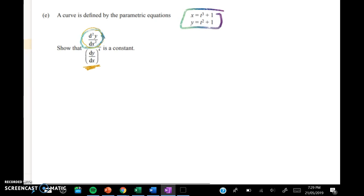We have to show that the second derivative divided by the first derivative to the power of 4 is a constant. Now I'm not going to do this very slowly because I've done other videos on how to do parametric differentiation.